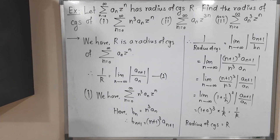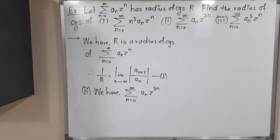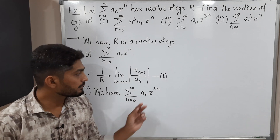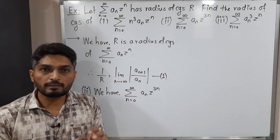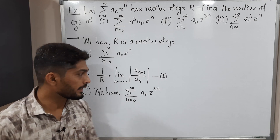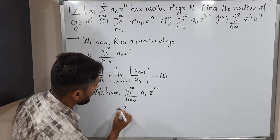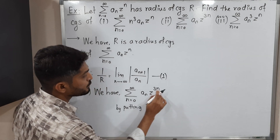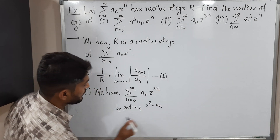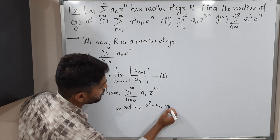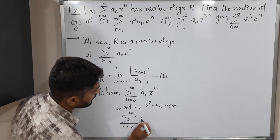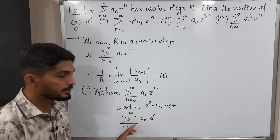Now let us discuss the second power series. It looks a little different because of z raised to 3n — generally we have z raised to n. So I am going to use a substitution technique: put z³ = w, so z raised to 3n becomes w raised to n. By putting this substitution, we get summation n from 0 to infinity, aₙ·w raised to n, which now looks like a standard power series.